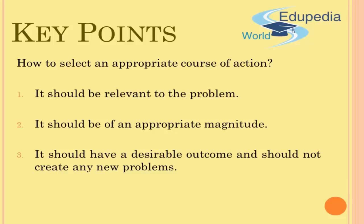The second criterion is that the solution should be of an appropriate magnitude. For example, there's a huge outbreak of cholera in a city — people are dying, and cholera is a waterborne disease. The local civic body decides to educate people to install water purifiers at home. This may lead to cleaner drinking water in the long run, but it will not solve the cholera epidemic — it's too small a step for a very big problem.